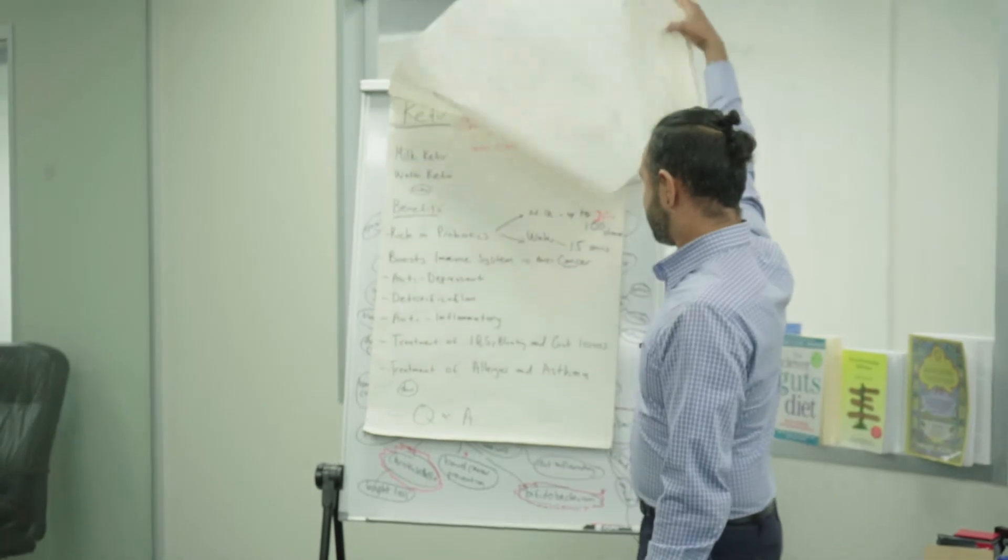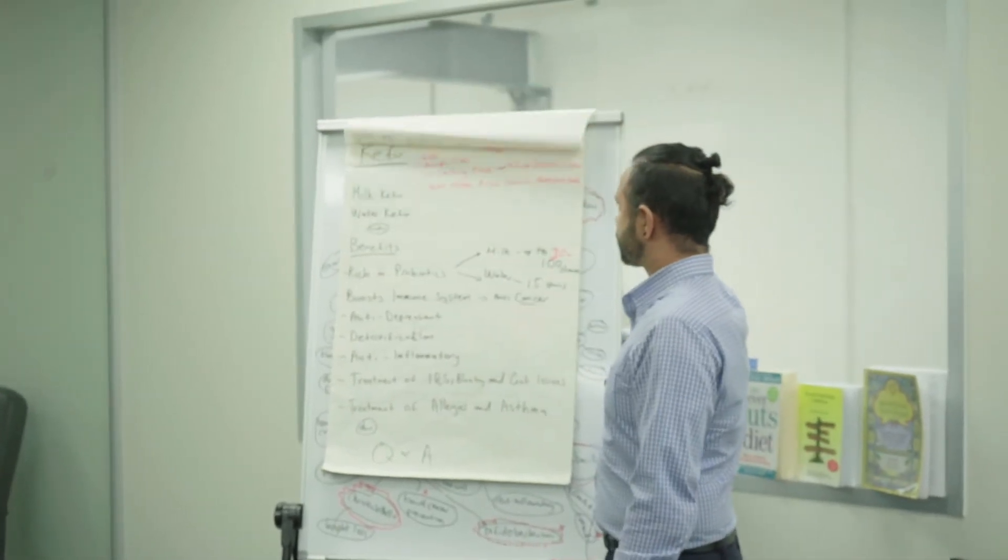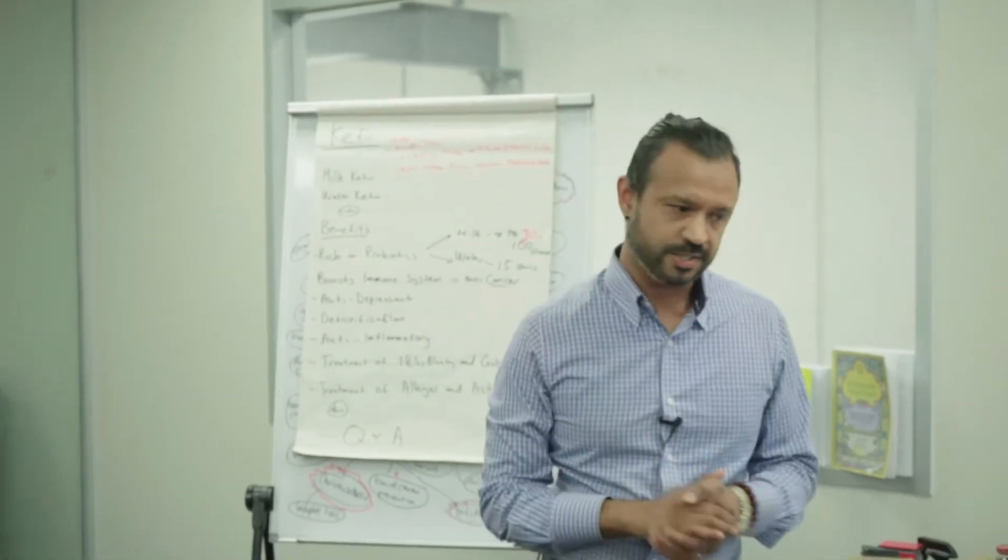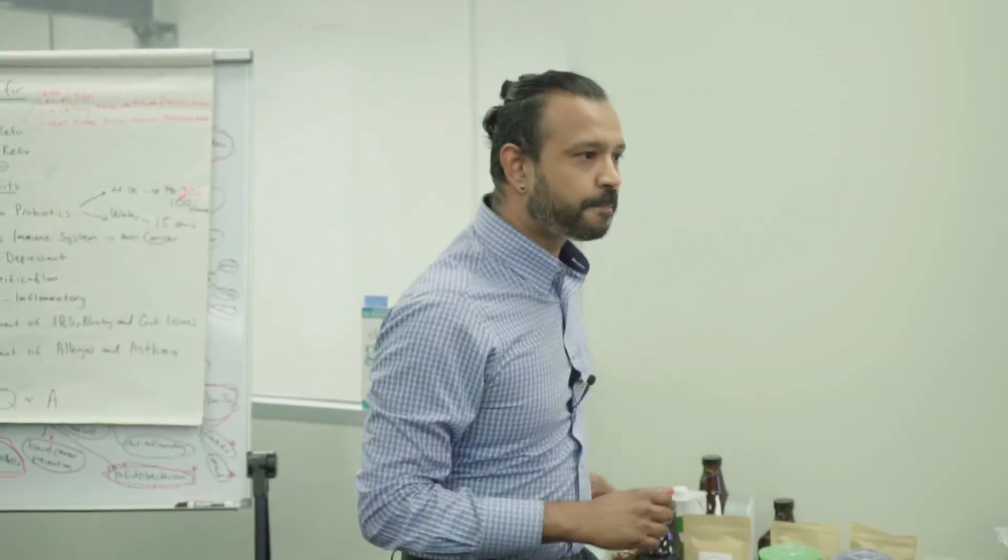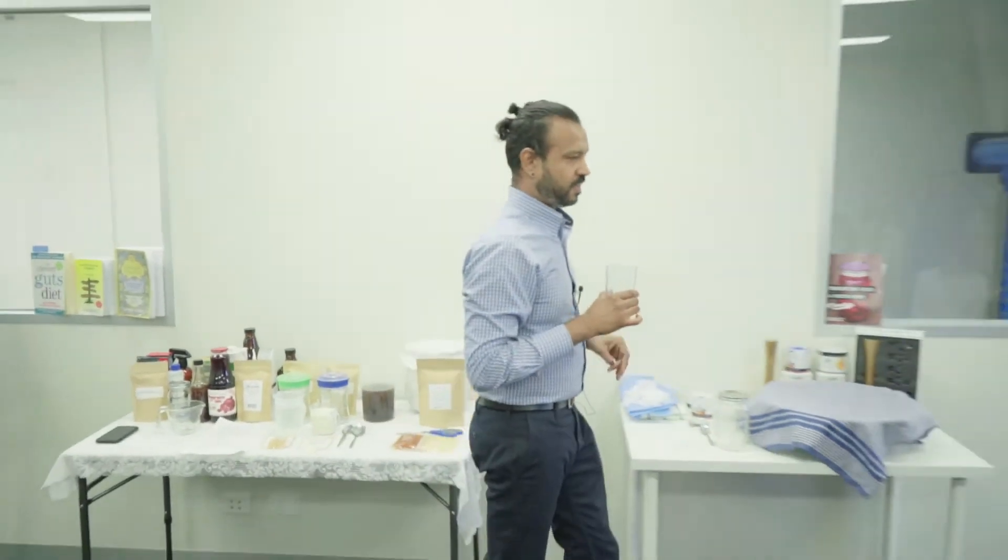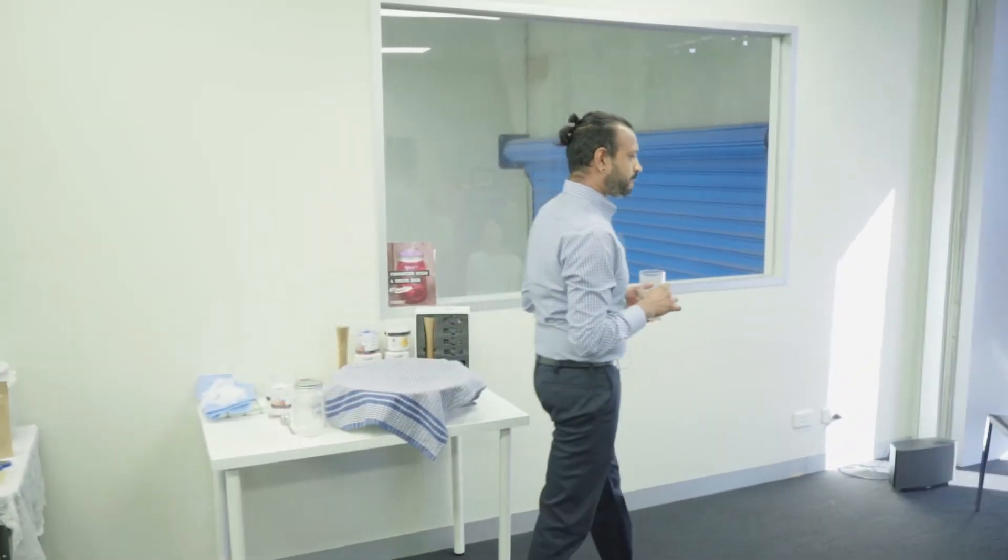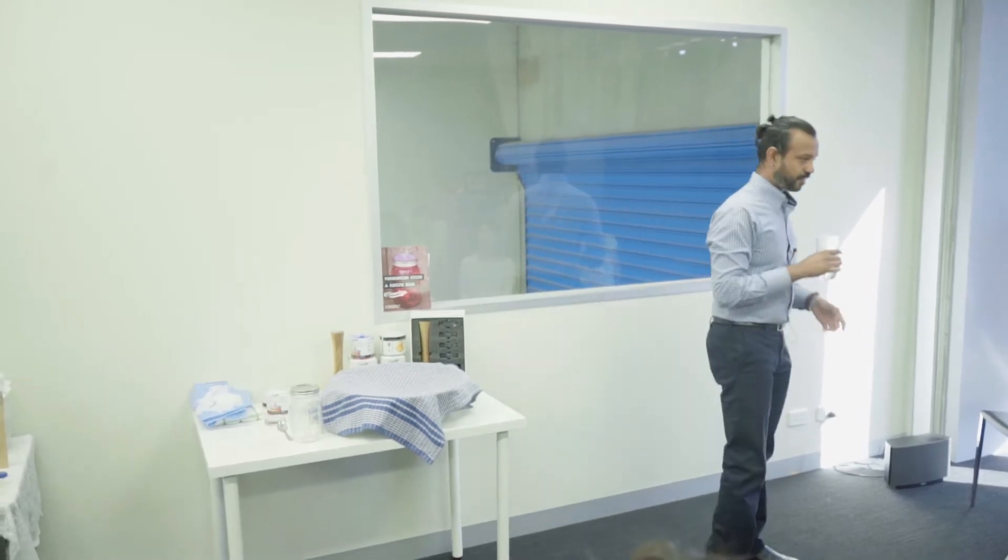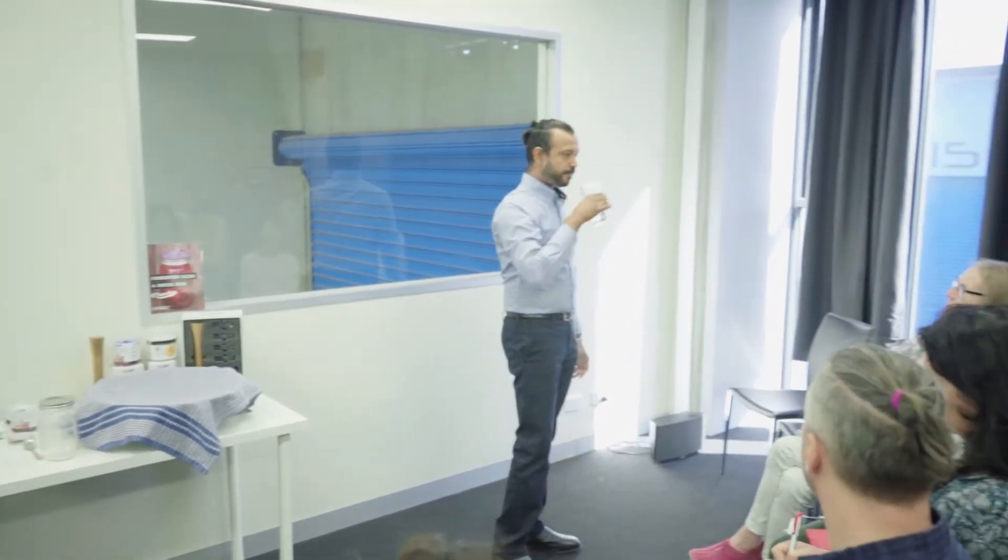How long would you fast for? For 5:2, I recommend around 16 hours. It's actually quite easy to fast because if you count sleeping time, if you skip breakfast and have lunch at 12 or 1, that's a fast.